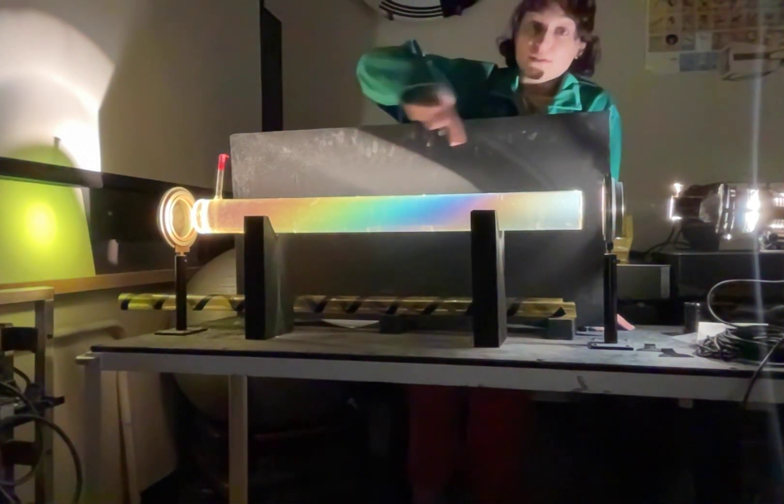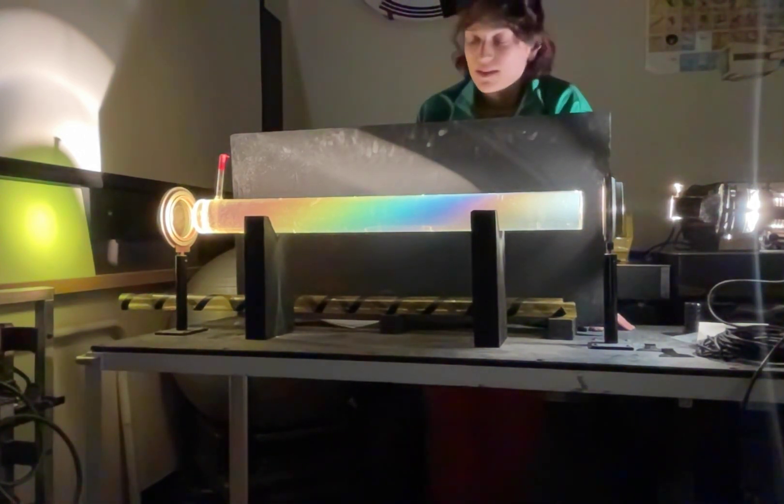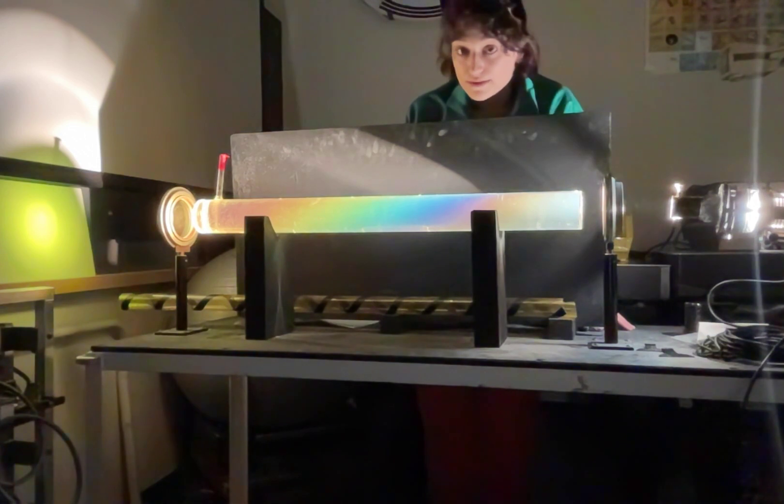The light travels down this tube and interacts with the sugar molecules that are inside of the solution. Now sugar is an optically active material, which means that when it interacts with light, it changes the polarization of that light.